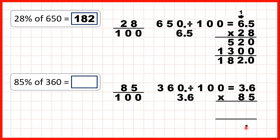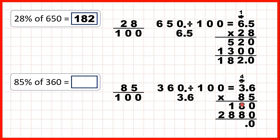Copy down the decimal point. 6 times 5 is 30; 3 times 5 is 15 plus 3 is 18. Cross out the working, write a zero in the second answer line. 6 times 8 is 48; 3 times 8 is 24 plus 4 is 28. Adding up: 0 plus 0 is 0; 8 plus 8 is 16; 1 plus 1 plus 8 is 10; 1 plus 2 is 3. So we get 306.0, or 306 as our answer.